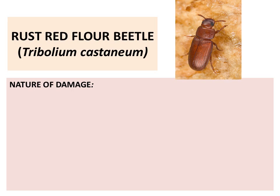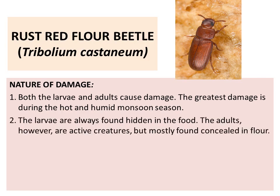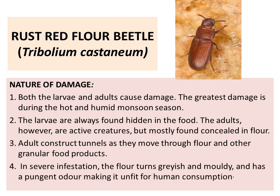Rust red flour beetle — nature of damage: both larvae and adults cause damage. The greatest damage is during the hot and humid monsoon season. The larvae are always found hidden in the food. The adults, however, are active creatures but mostly found concealed in the flour. Adults construct tunnels as they move through the flour and other granular food products. In severe infestation, the flour turns grayish and moldy and has a pungent odor, making it unfit for human consumption.